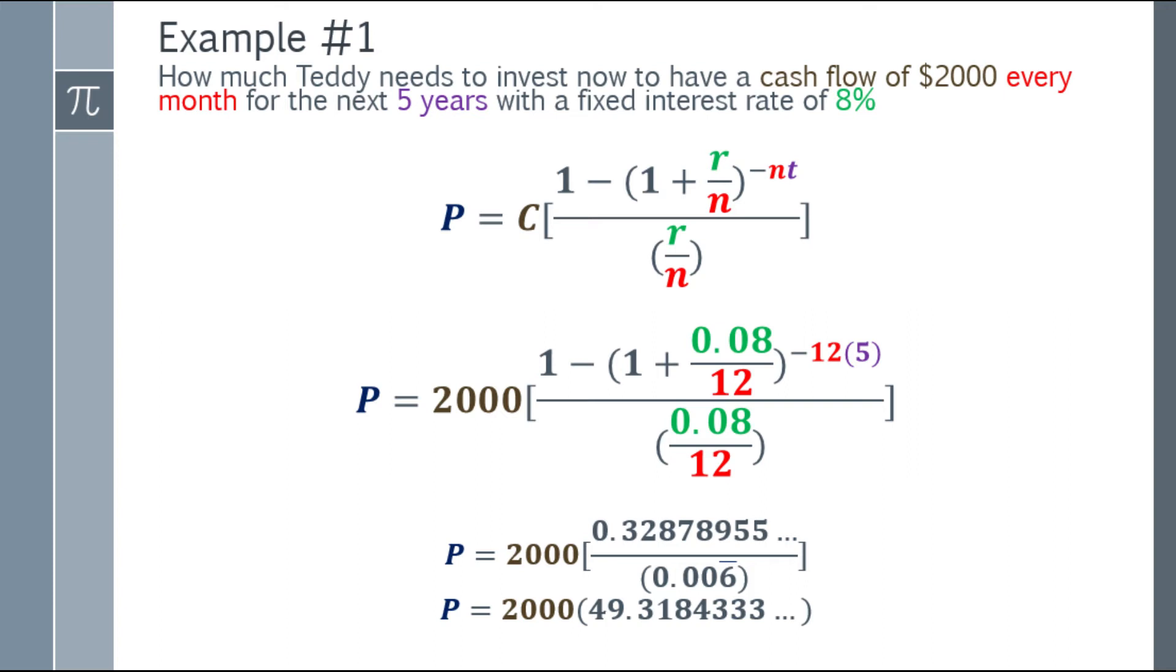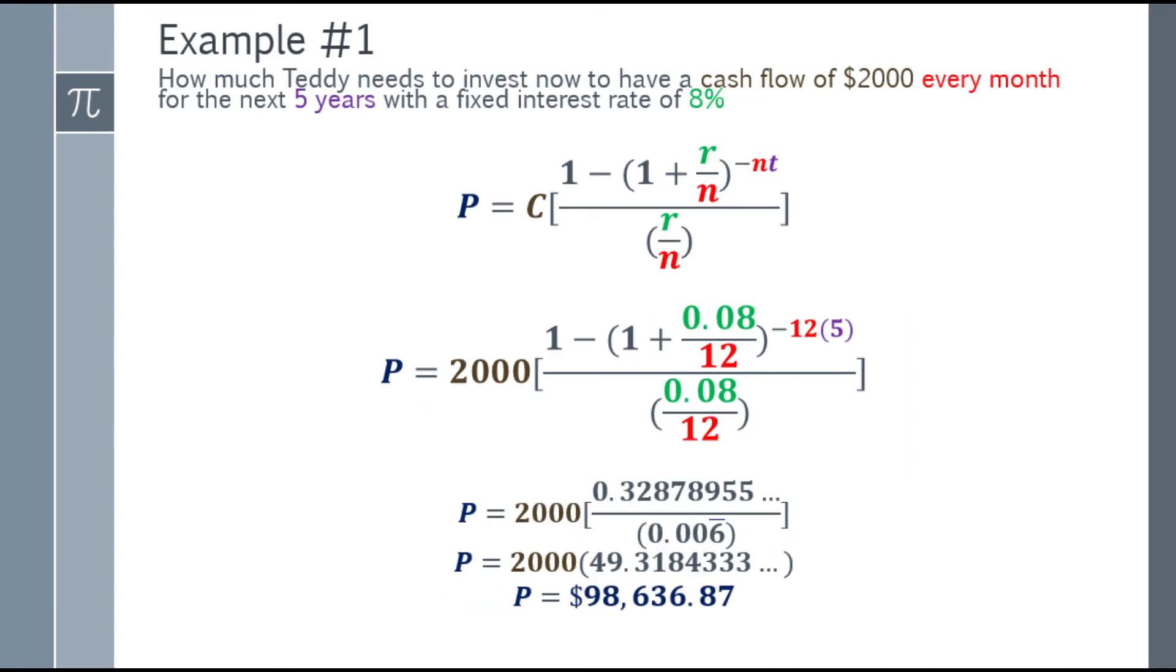Last step, multiply by 2,000 and you will get an answer of $98,636.87. That's how much Teddy needs to invest now to have a cash flow of $2,000 every month for the next 5 years with a fixed interest rate of 8%.